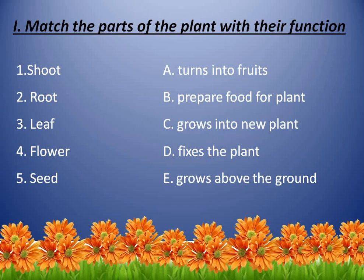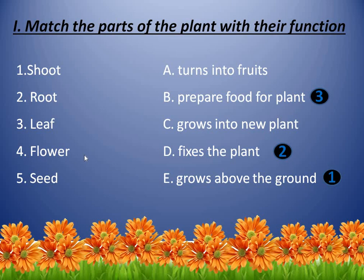First, match the parts of the plant with their function. The first is shoot — shoot grows above the ground. Root — root fixes the plant. Leaf — leaf prepares food for the plant. Flower — flower turns into fruits. Seed — seed grows into a new plant.